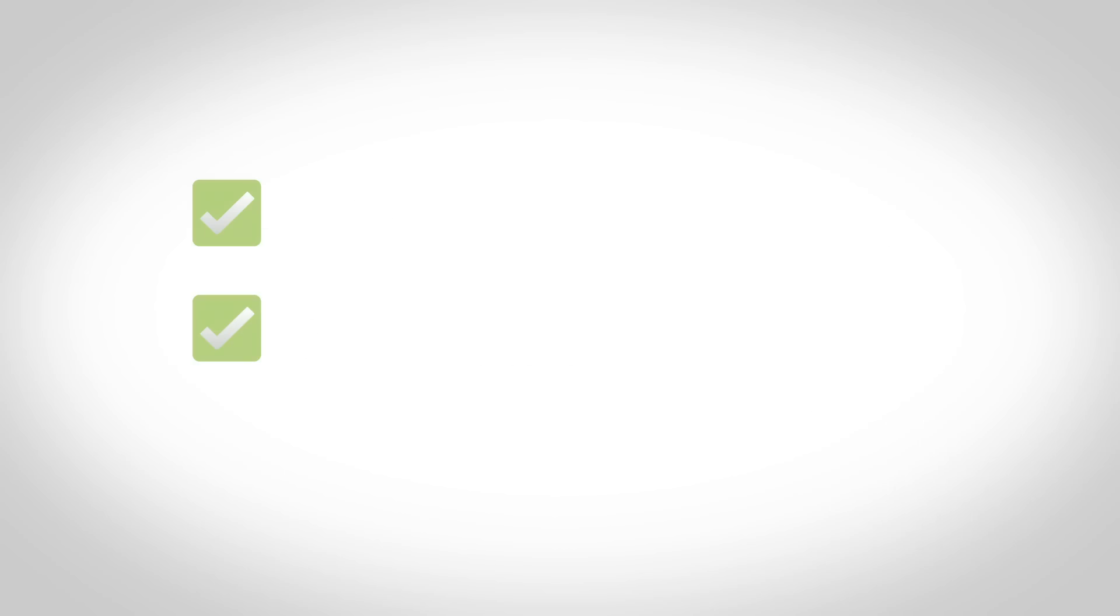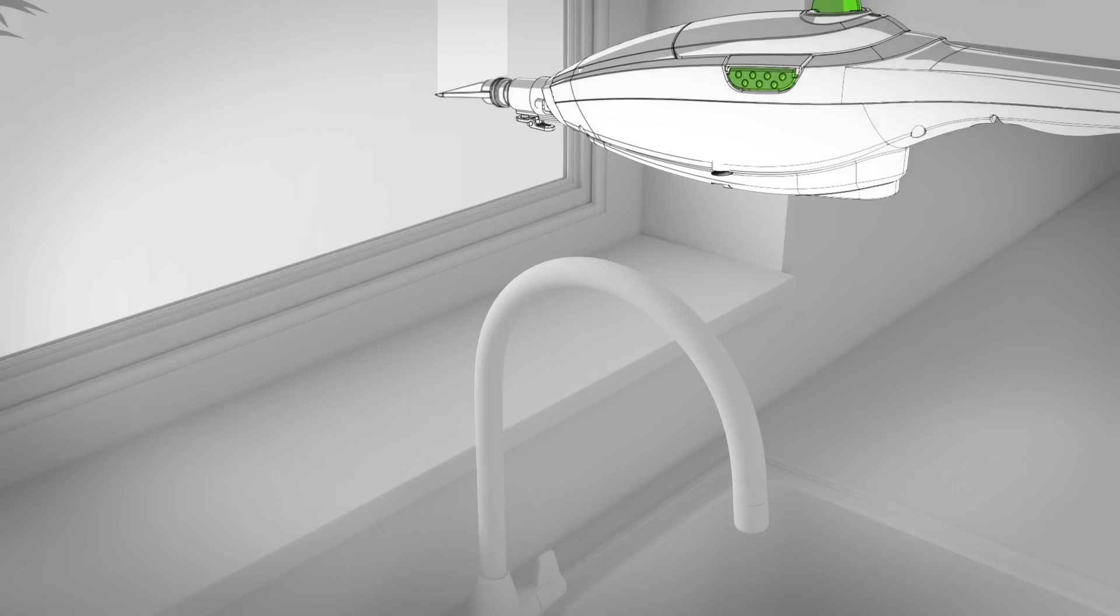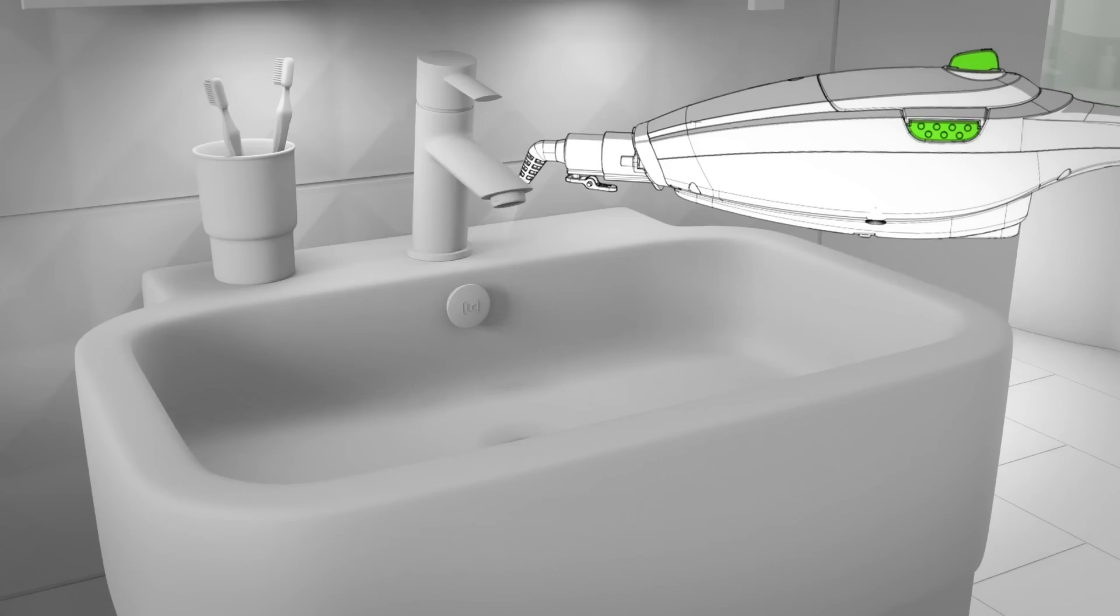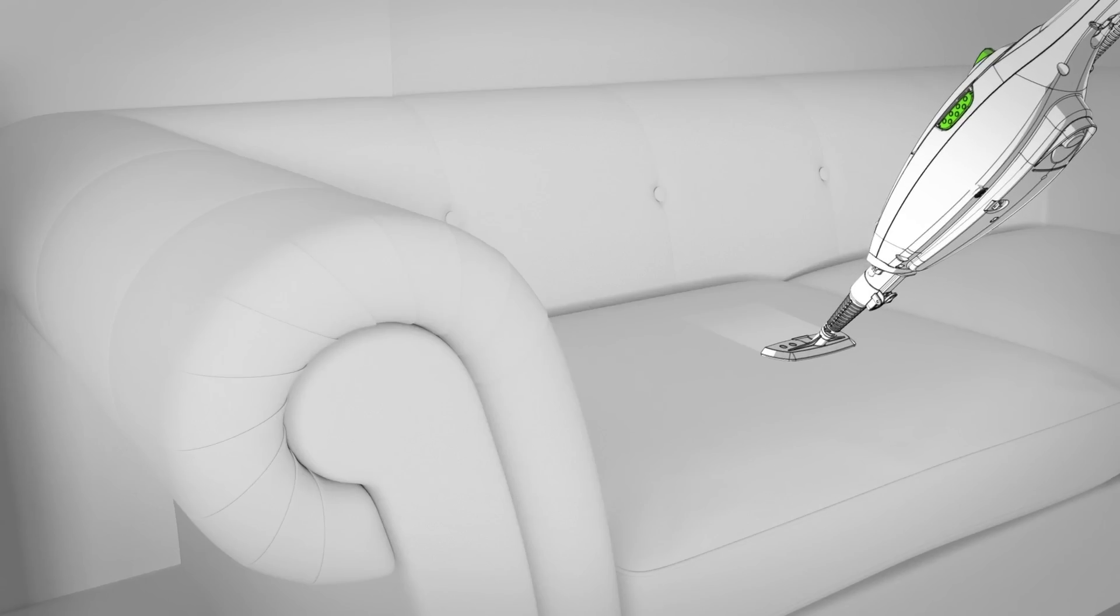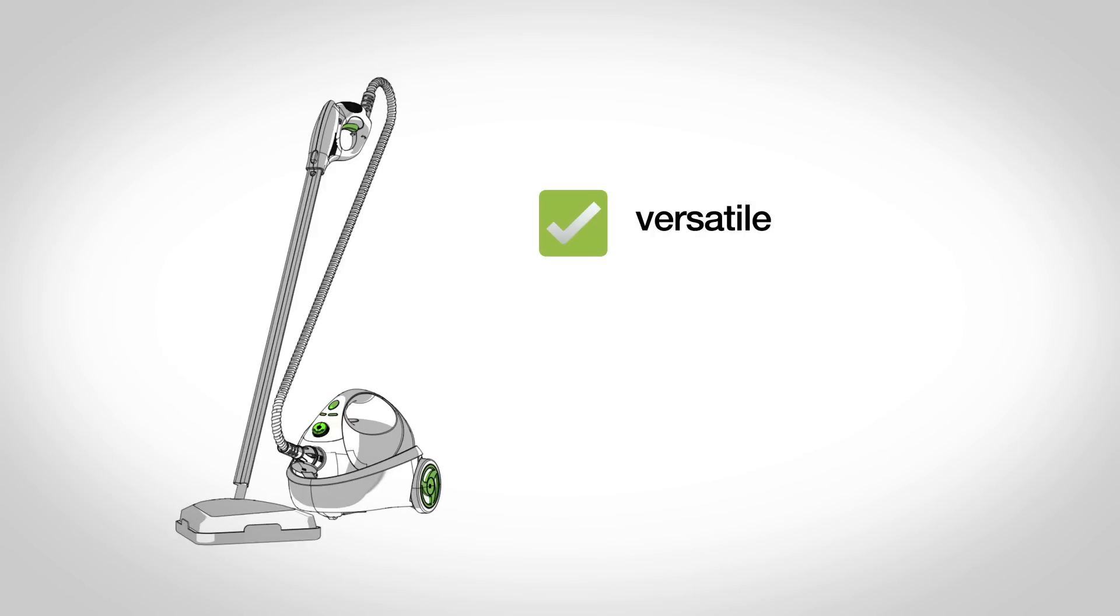Through a variety of different accessories, the handheld unit can be used to tackle work surfaces, windows, tiles, hobs, taps, sanitary wear and they can even freshen up your garments and upholstery. Quick to heat up, these can be refilled on the go without the need for a break between cleaning.